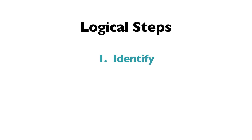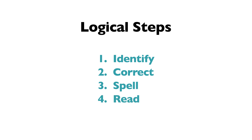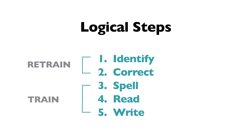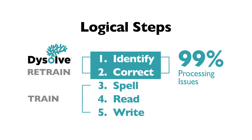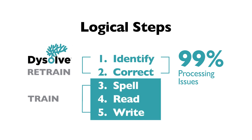We recommend that struggling learners proceed logically. First, identify and correct the processing issues causing the difficulty. Then only work on spelling, reading, and writing. Only when you retrain the brain to process language efficiently can you train it to spell, read, and write successfully. Ninety-nine percent of the children we meet have processing issues, and that's why Dissolve should be the starting point. Only after that can teachers and tutors work on skills effectively.